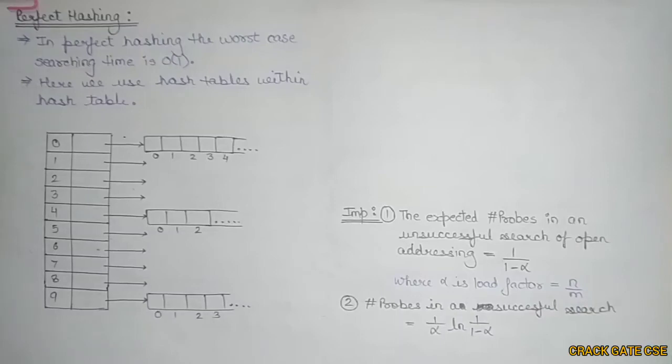Hello friends, welcome to Crack CSE. In this series on algorithms, we'll be discussing perfect hashing. We're discussing perfect hashing because the worst case time complexity of double hashing was O(n), and our goal is to search for a particular element in hashing in constant time, that is O(1) time.